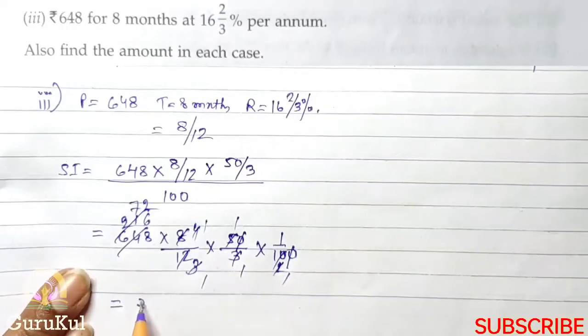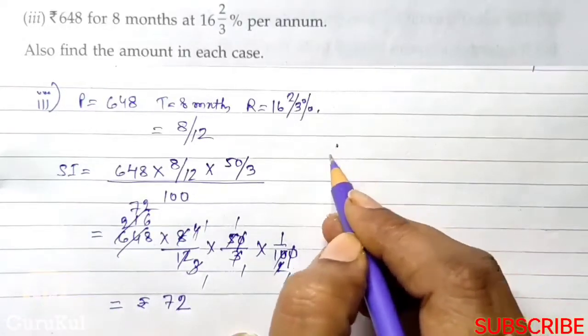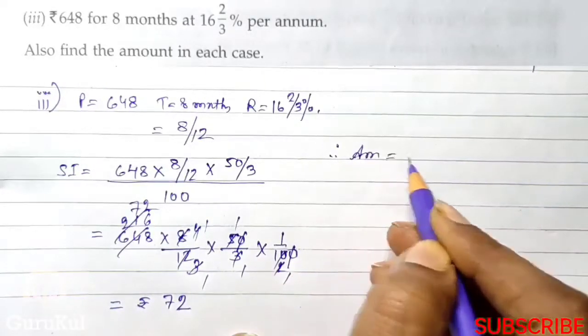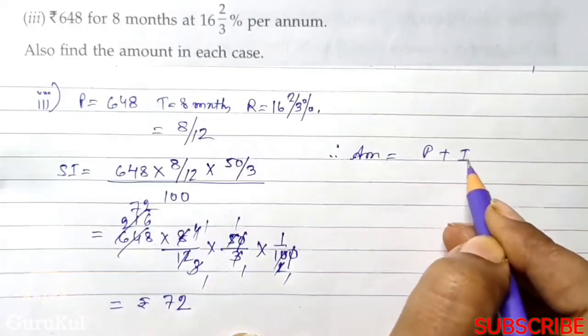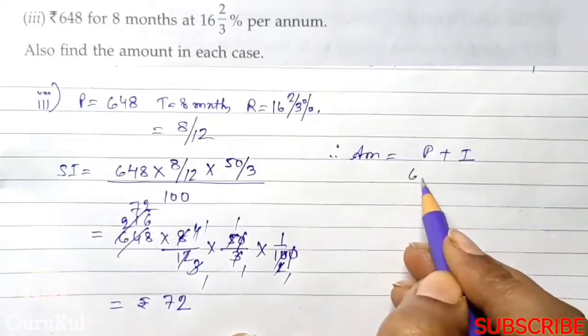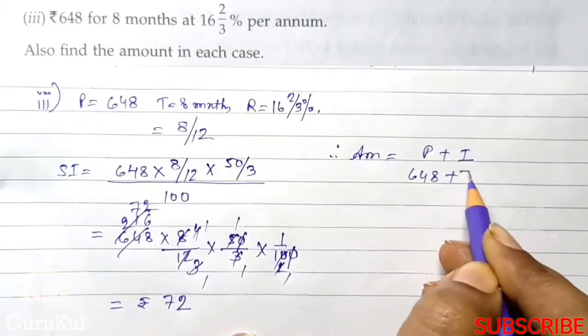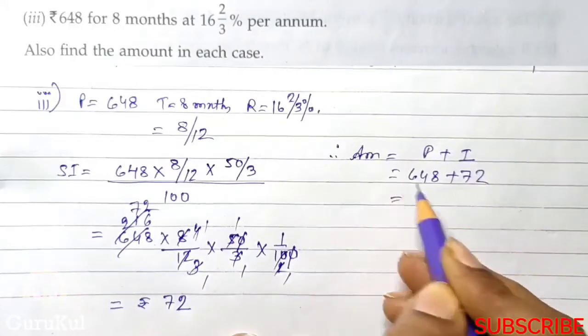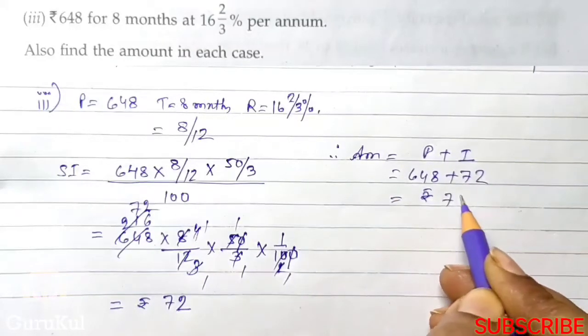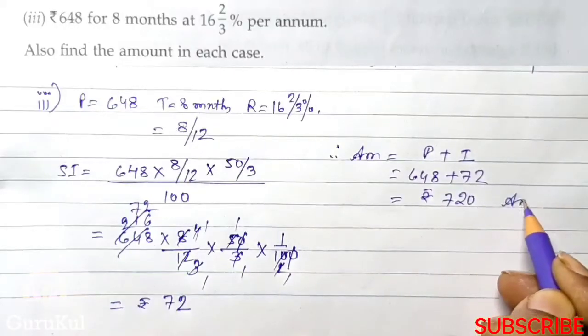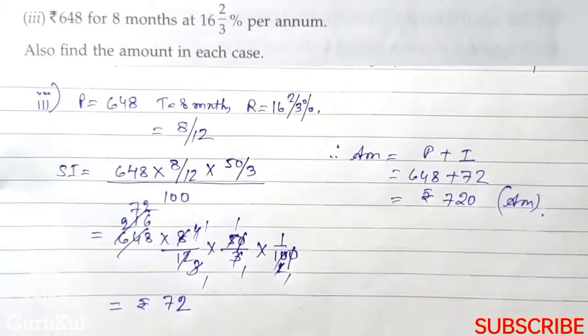So SI is Rs. 72. Therefore, amount is equal to P plus interest, P is 648 plus 72 which gives us Rs. 720. So this is the answer.